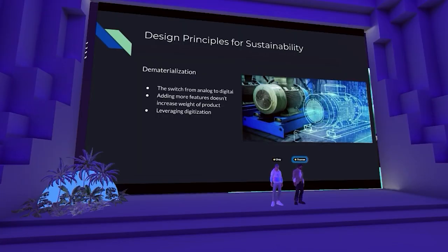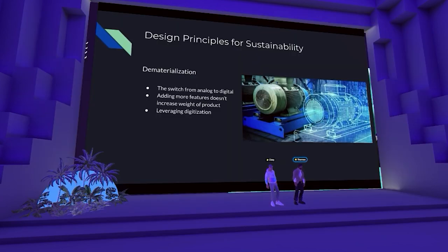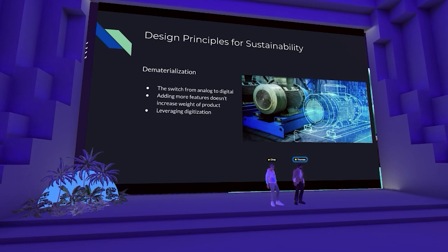Dematerialization is what is currently happening in the technology space — it's a design principle that talks about the switch between analog and digital. This principle calls attention to the fact that many products today are not physical, so adding features to a mobile app or web app does not increase the weight of production. There's less updating time because there's less distance between our physical selves and the digital products we use. Leveraging digitization at every step and moving from analog to digital conserves resources.